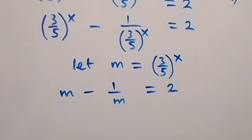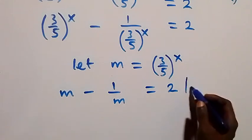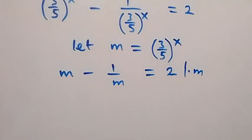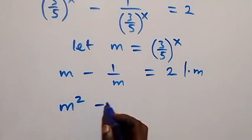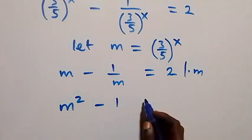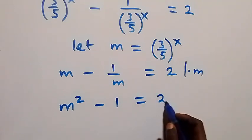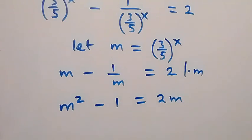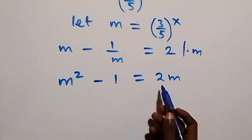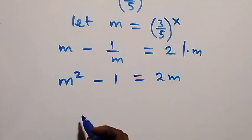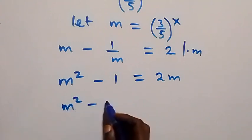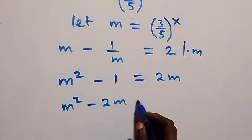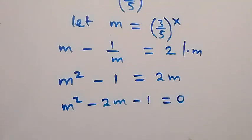Here we can clear this fraction and multiply through by m. Then we have m times m, that is m squared, minus 2m, then minus 1. We take 2m to this side and rearrange to form a quadratic equation: m squared minus 2m minus 1 equals to 0.